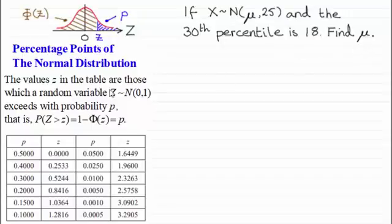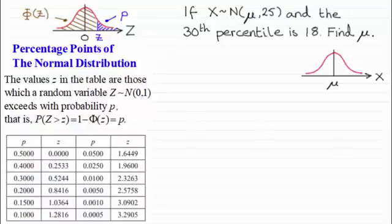We can either use tables or a calculator. I'll be demonstrating this using the Casio ClassWiz calculator, but you'll find similar functions on other calculators. The first thing I'd want to do is sketch the normal distribution graph for the random variable X. It has a mean mu, and since the 30th percentile is 18, the probability of being less than 18 is 0.3 — so 18 must be to the left of the mean mu, with 30% of the area shaded below it.